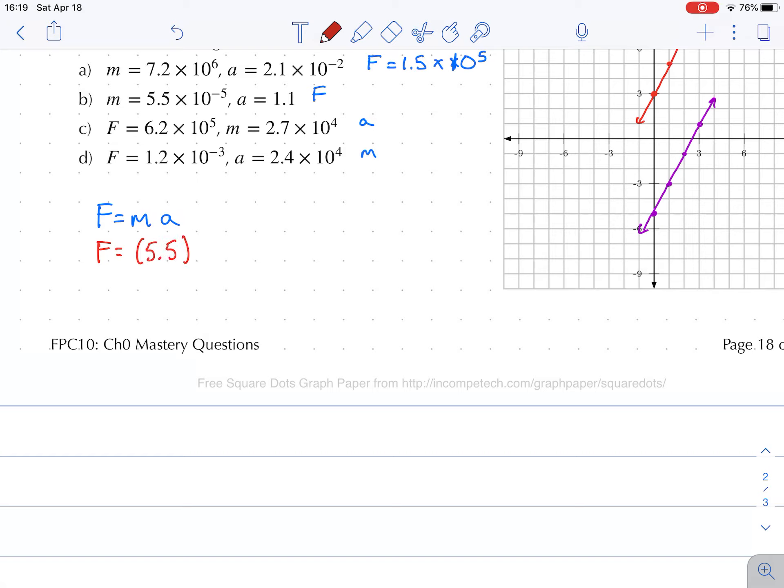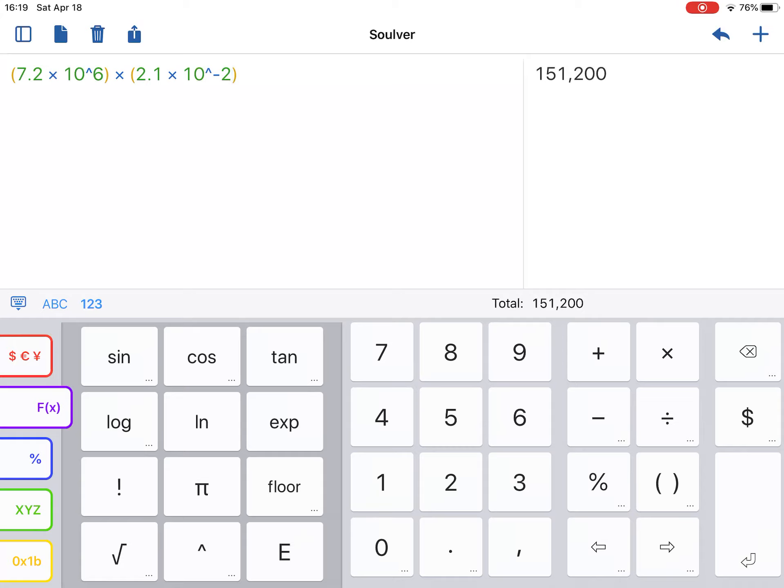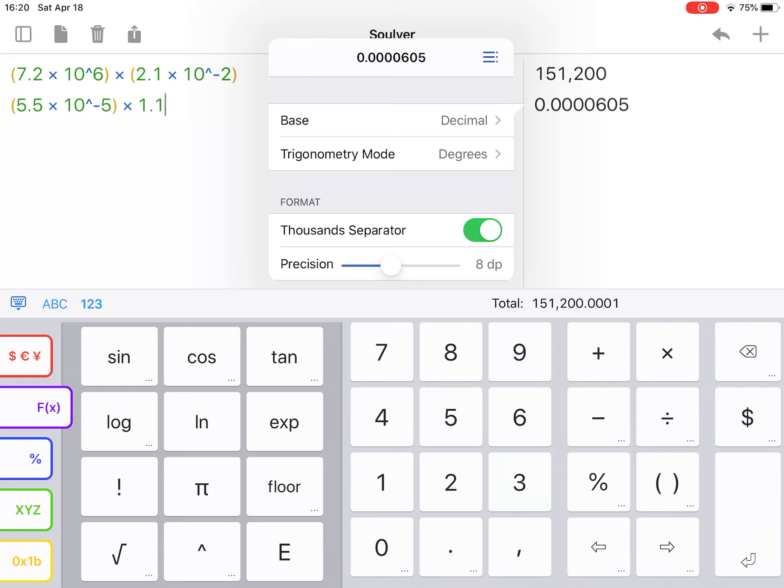All right, let's do the second one. Force is equal to mass times acceleration. It's going to be 5.5 times 10 to the minus 5 times that by 1.1. All right, and I'm going to get a final force. So I'm going to go to a new line. If I put in brackets, 5.5 times 10 to the power of minus 5, times that by 1.1, and I get 0.0000605.